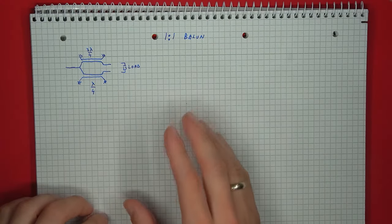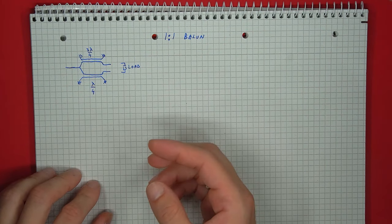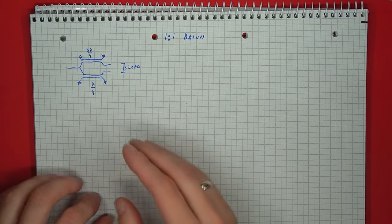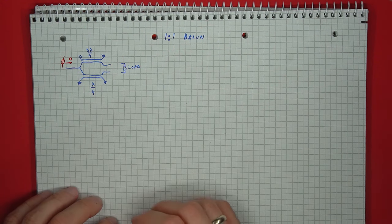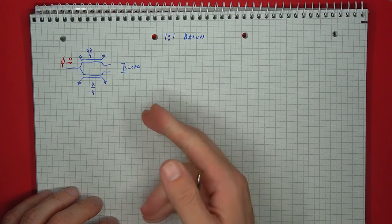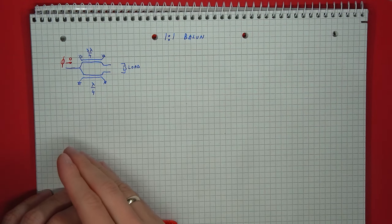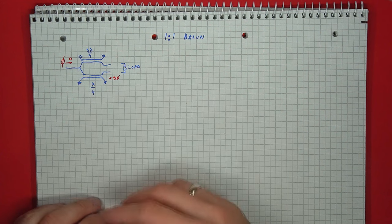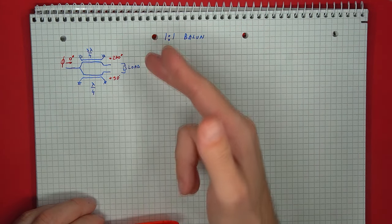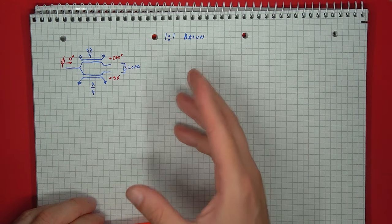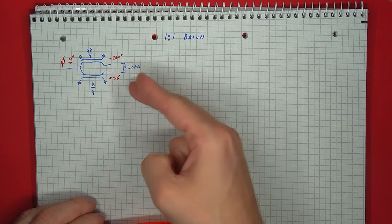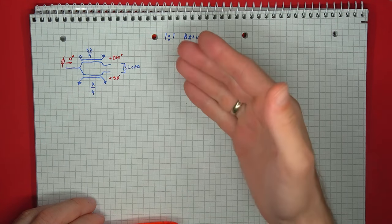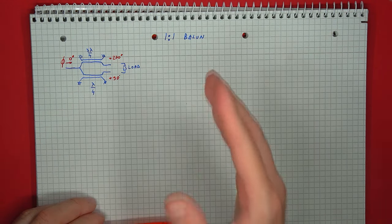Let's analyze the 1-to-1 balun, which is built with two sections of transmission line — one with a quarter wavelength length and the other with three-quarter wavelengths. Starting with the phase: if we begin with a zero-degree reference signal, the quarter wavelength section will produce a 90-degree phase shift, and the three-quarter wavelength branch will produce a 270-degree phase shift. So the signals arriving at the load have exactly 180 degrees of phase shift between them — we are getting a differential signal.